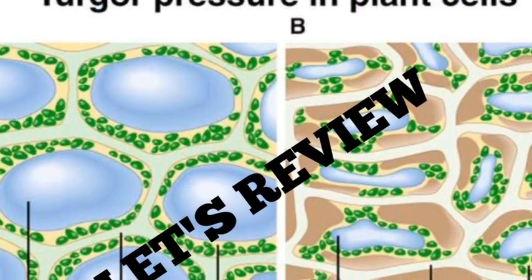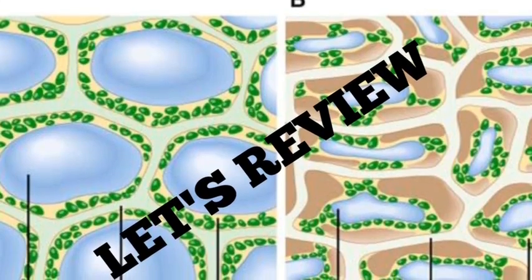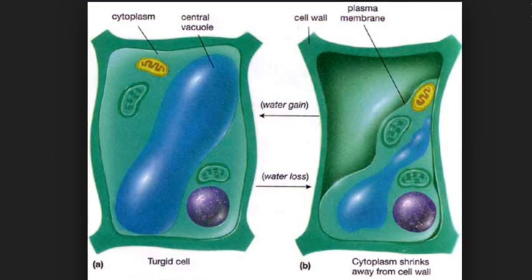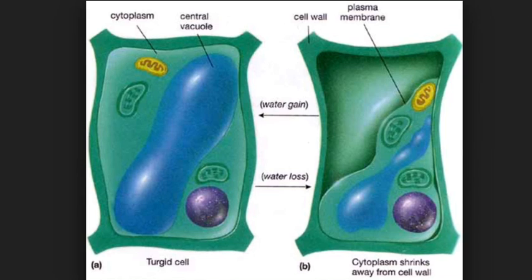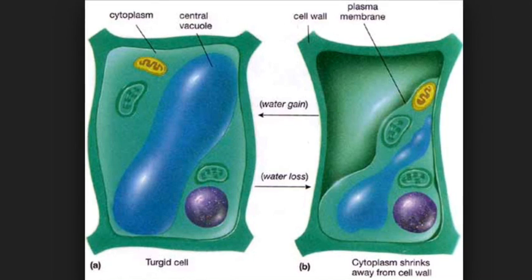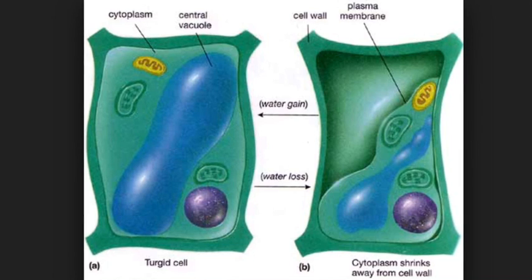Okay, let's review. Turgor pressure is the pressure exerted on a plant cell wall by water passing into the cell by osmosis. It can also be called hydrostatic pressure. When a plant has enough water and is healthy, it will have a high level of turgor pressure. If the plant does not have enough water to sustain it or is not healthy, the plant will shrivel up due to the low level of turgor pressure. The structure of the plant vacuole is related to its ability to control its own hydrostatic pressure, because water is stored inside the vacuole of plant cells.